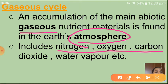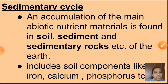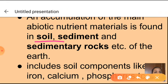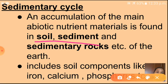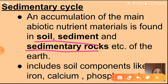Next, the sedimentary cycle: an accumulation of the main abiotic nutrient materials is found in soil, sediment, and sedimentary rocks. In gaseous cycles, nutrients accumulate in the Earth's atmosphere, but in the sedimentary cycle, nutrient materials are found in soil, sediment, and sedimentary rocks. It includes soil components like iron, calcium, and phosphorus, etc.